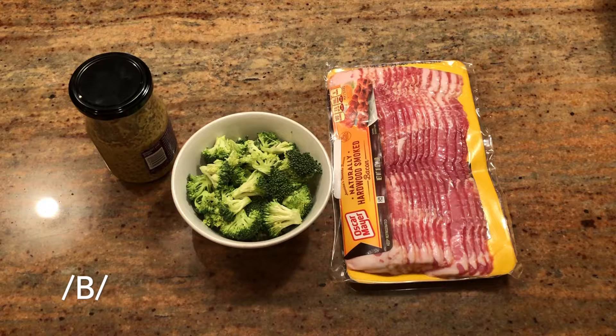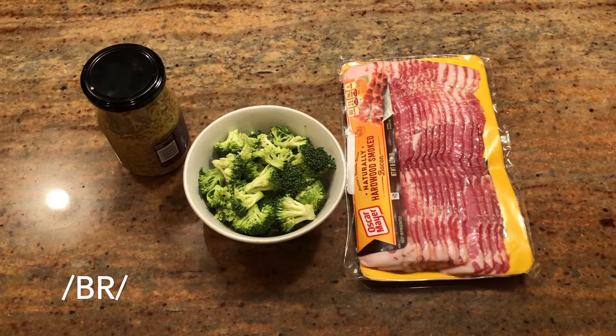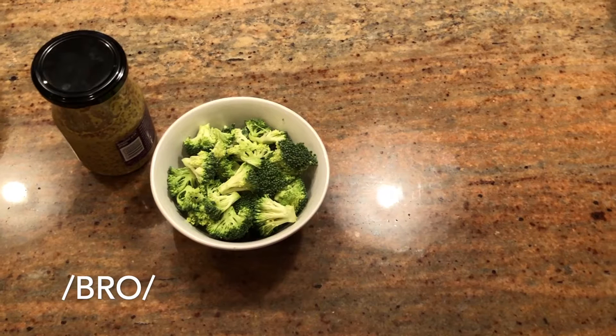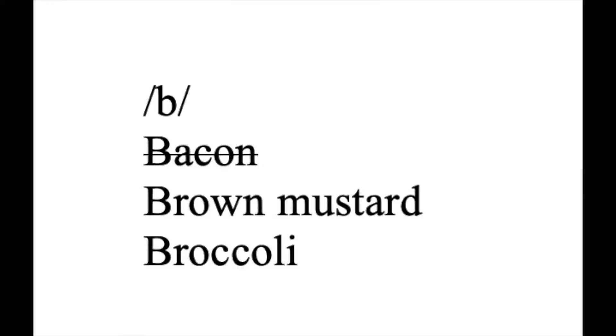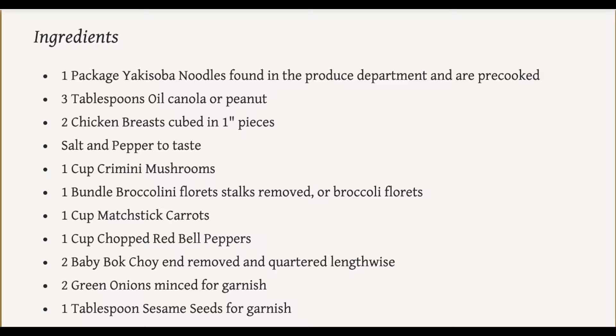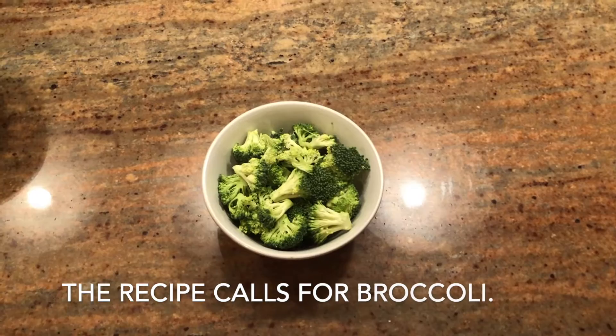Here I have three different ingredients, all beginning with B. As we receive more input, certain ingredients can be ruled out. The bacon is the first to go, leaving two leftover. As more input comes in, our choices are beginning to narrow down, and eventually a word is recognized based on the word onset and context given. For the context, we can refer to the ingredients list. According to the recipe, it calls for one bundle of broccolini florets, stock removed, or broccoli florets that we have here. Therefore, through lexical access, we know we can proceed with the broccoli for our stir-fry.